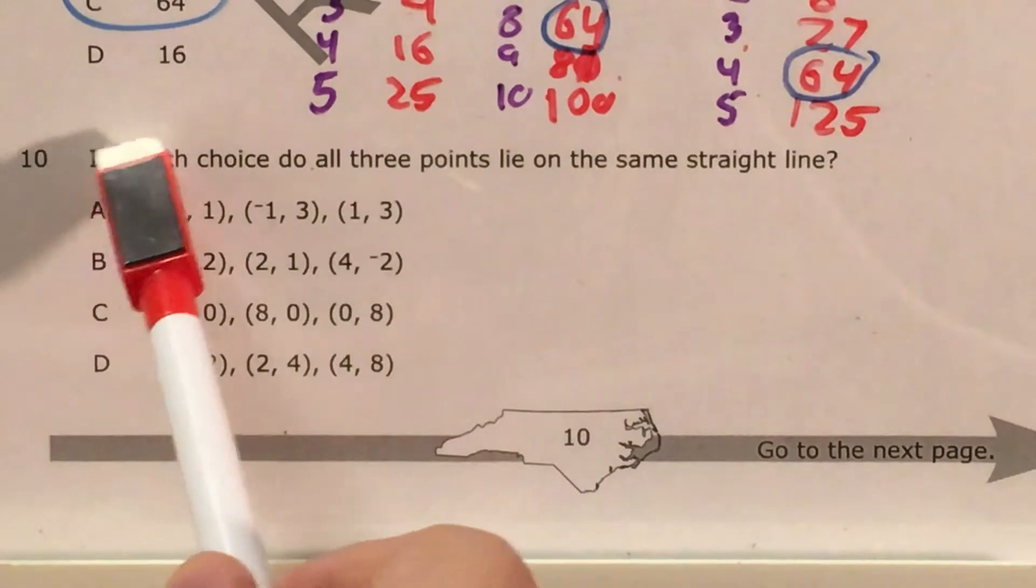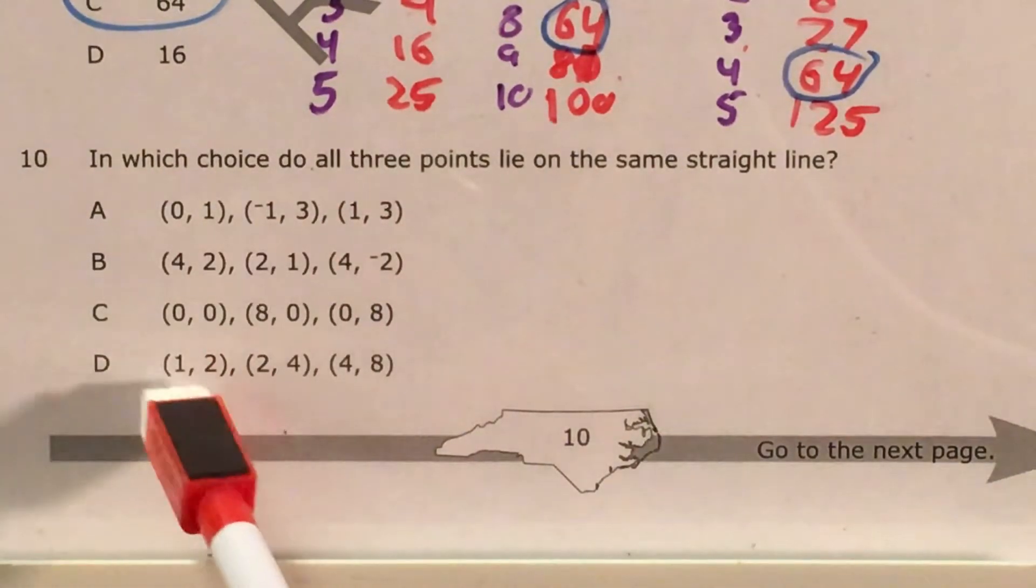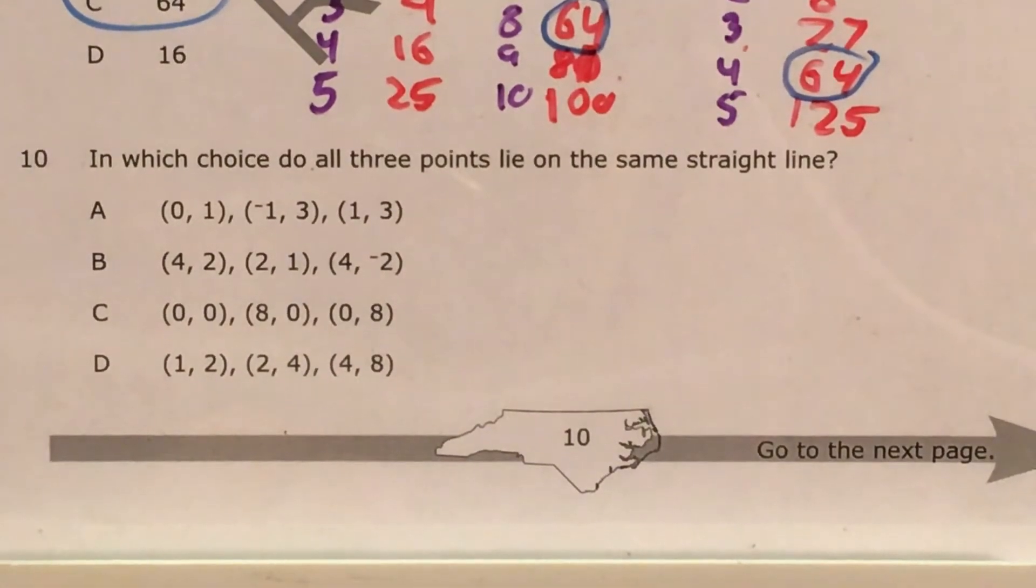Today we're going to tackle question 10 in the eighth grade math questions that North Carolina released this past school year. We're being asked to tell in which choice all three points lie on the same straight line.